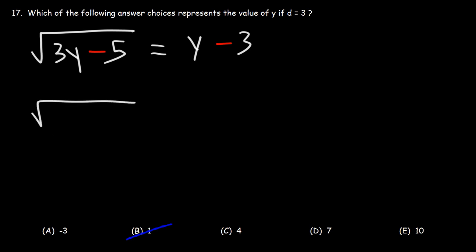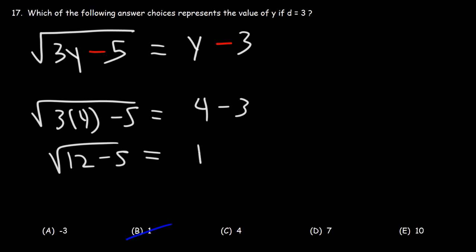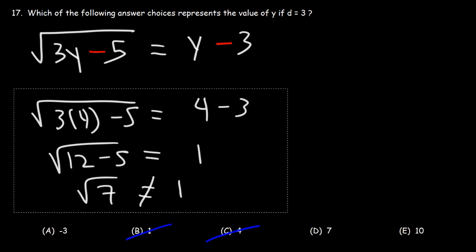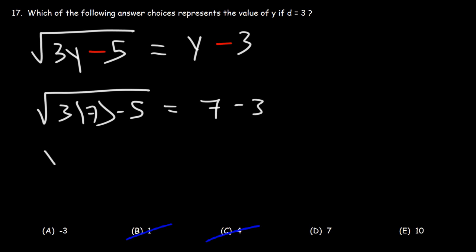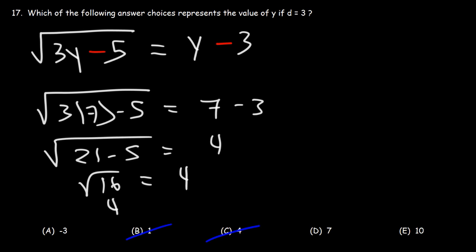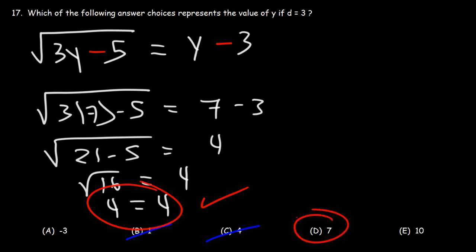Let's try C. We have 3 times 4 minus 5, and on the right side 4 minus 3. 3 times 4 is 12, and 4 minus 3 is 1. 12 minus 5 is 7, and the square root of 7 does not equal 1, so C is eliminated. Let's try answer choice D — let's see if y is equal to 7. We have 3 times 7 minus 5 equal to 7 minus 3. 3 times 7 is 21, 7 minus 3 is 4, 21 minus 5 is 16, and the square root of 16 does equal 4. So the left side equals the right side — answer choice D is the correct answer.